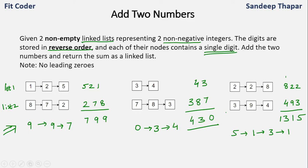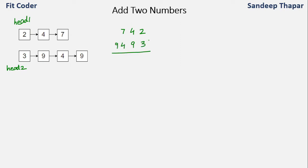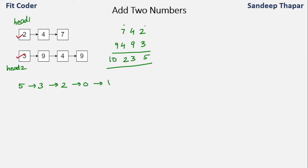Now let's see how we can solve this. Let's take the example where head1 is pointing to 2 and head2 is pointing to 3. The first linked list represents the number 742 and the second linked list represents the number 9493. If we add them it becomes 53201. One observation is that if we start our traversal from the head of both linked lists, we get digits 2 and 3.